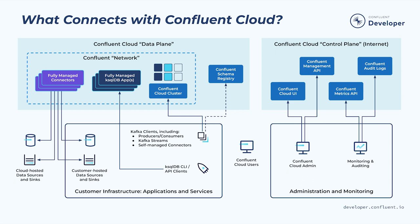Now let's look at the control plane. The control plane is where a lot of management, maintenance, and operations take place. Through these internet-accessible endpoints, you can do the following: provision and manage Confluent Cloud, including all of the resources in the data plane. You can monitor the health and performance of your Confluent Cloud resources. Additionally, you can track access to Confluent Cloud resources via audit logs.